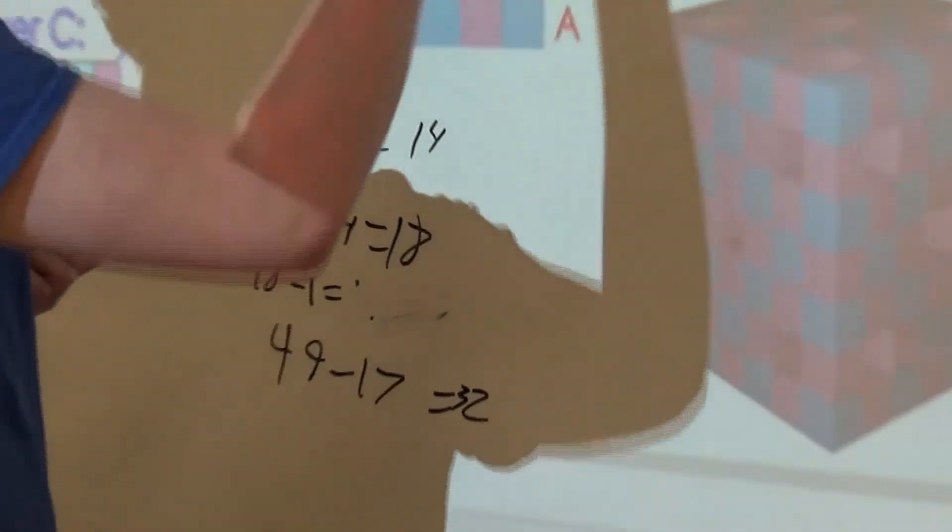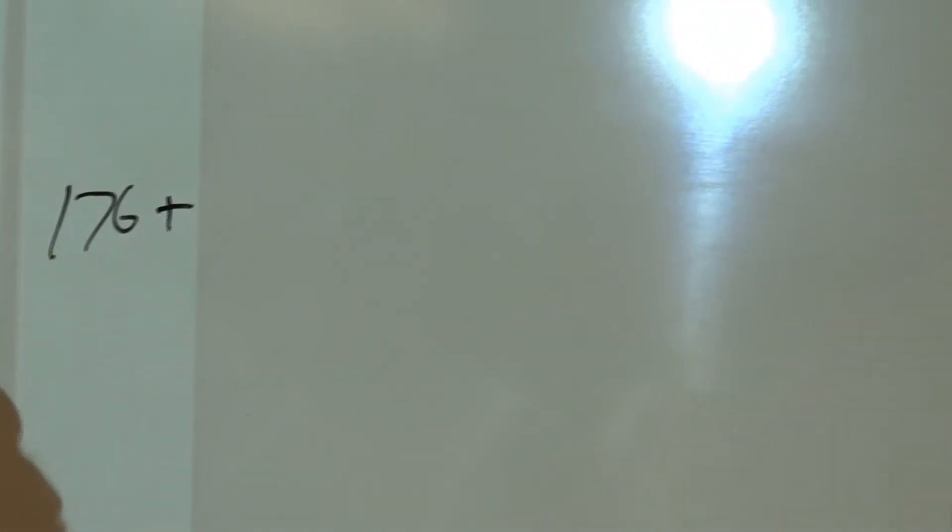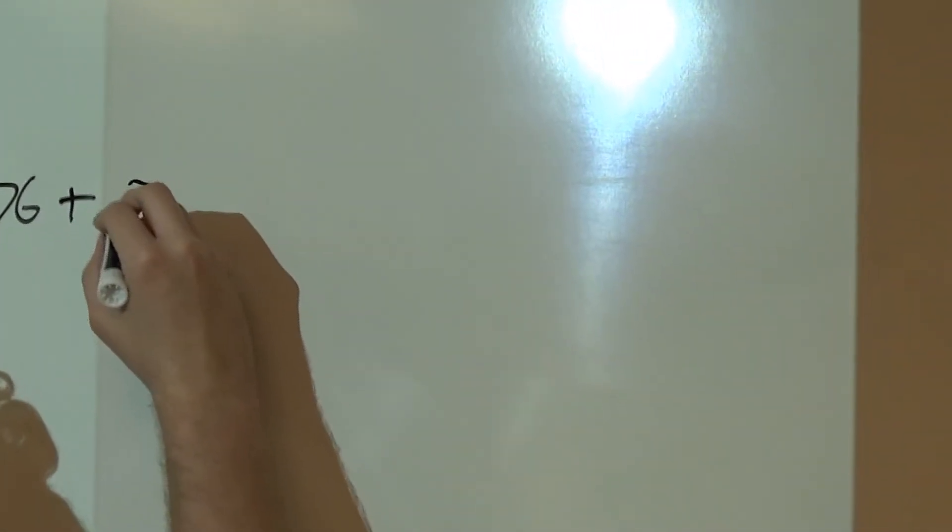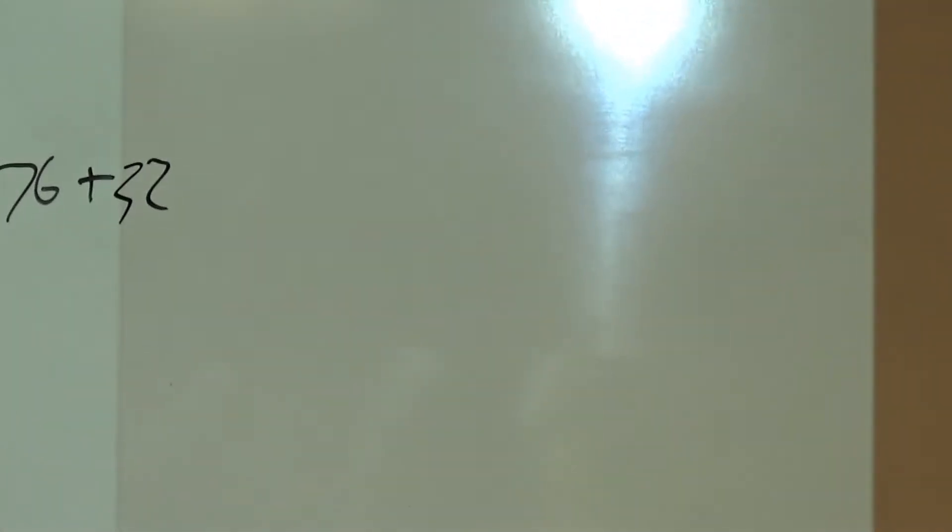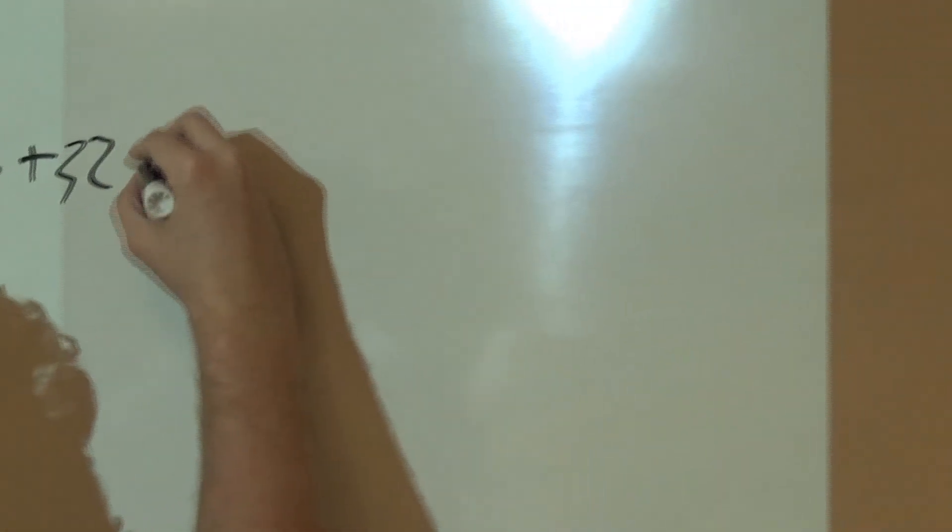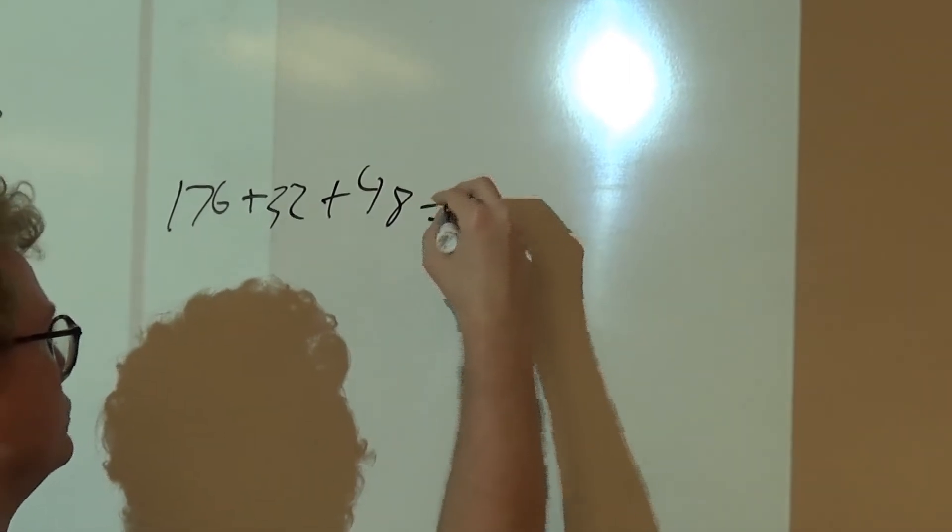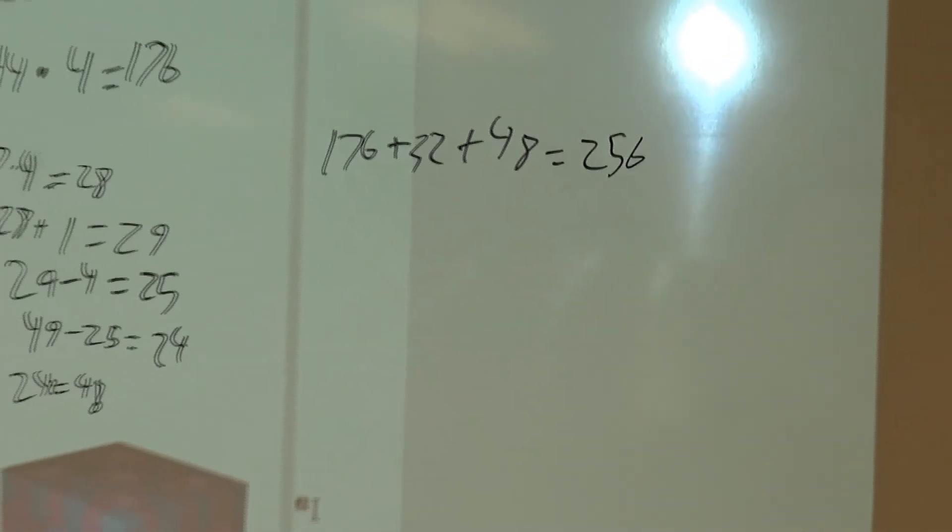Then we just add all these up: 176 plus... wait, 32. I need to multiply this by 2. So 48 equals 256 cubes inside this cube.